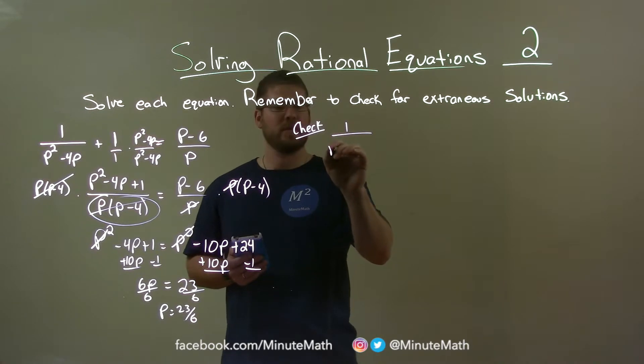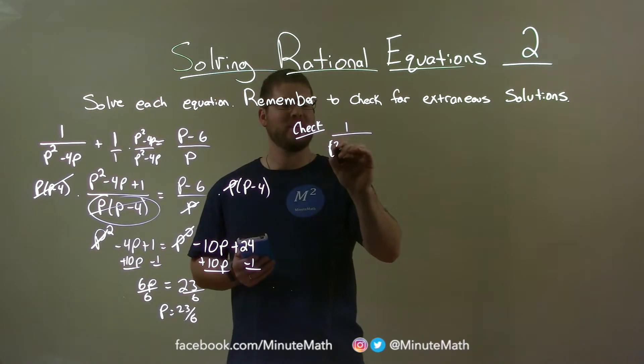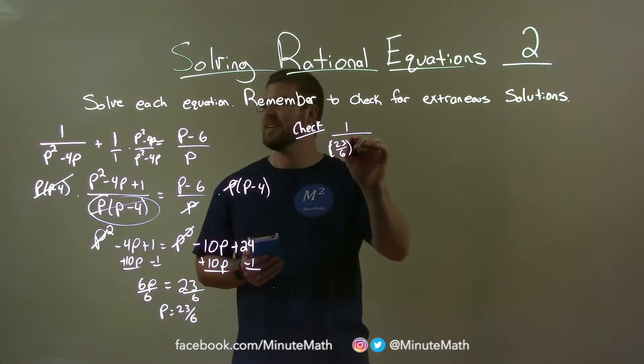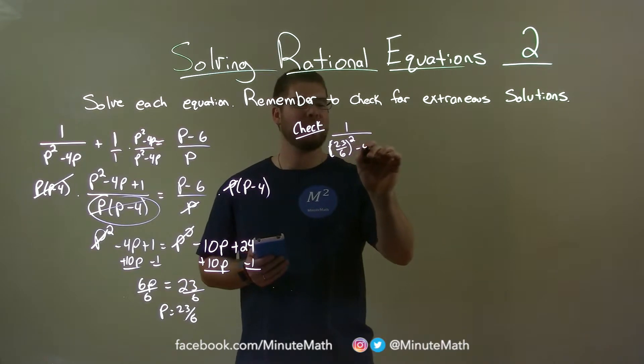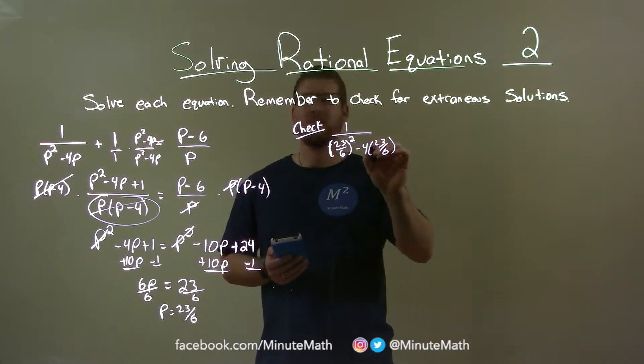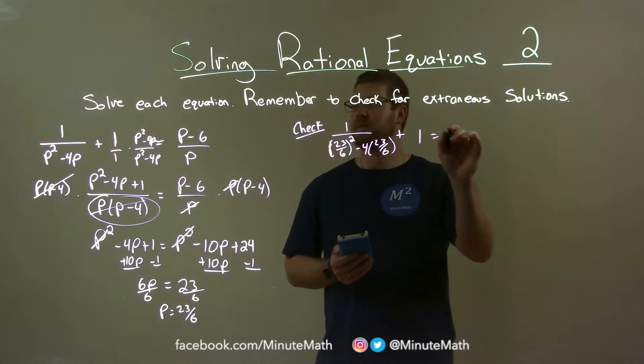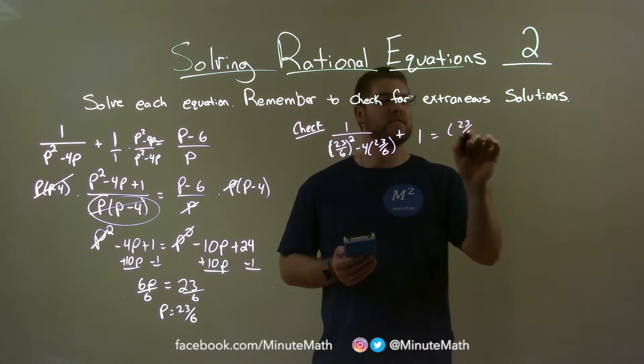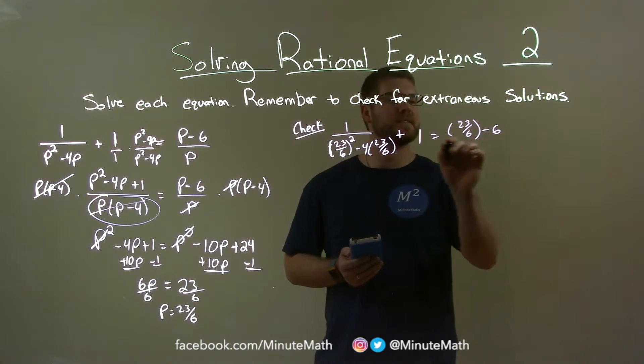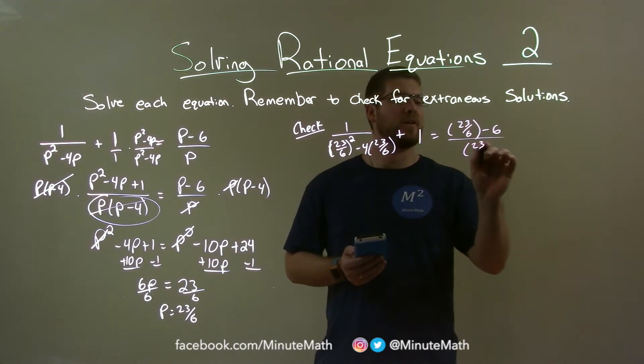1 over, we'll throw a p there, 23 over 6 squared minus 4 times 23 over 6. Remember, it's the original equation. So we just have a 1 here, plus 1, is equal to 23 over 6 minus 6 over 23 over 6.